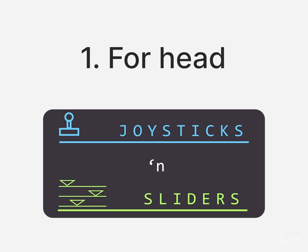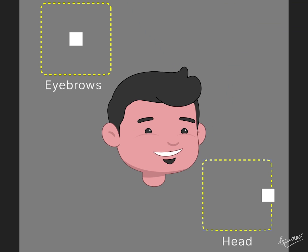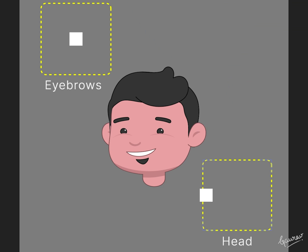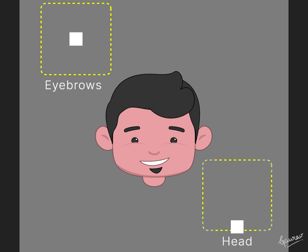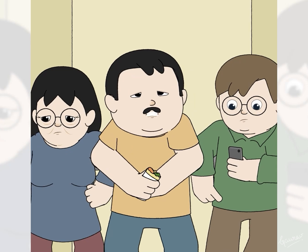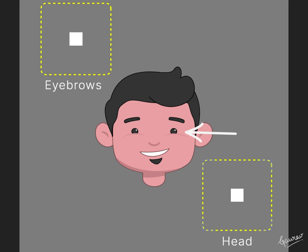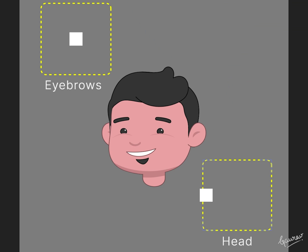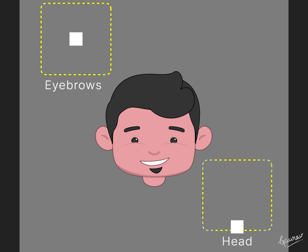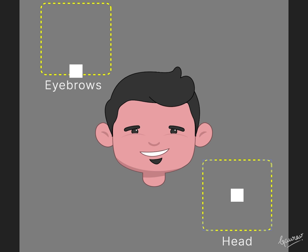For rigging the head I use Joysticks and Sliders. It is by far the best plugin to create a face that can show a wide range of emotions and movements seamlessly. Although I can create controllers for every part of the face, I only rig the things that are needed for the project. For example, this character does not need to be angry for the video, so this eyebrow controller only controls limited emotions.